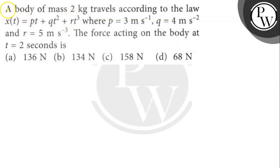Hello bachos, let's read the question. A body of mass 2 kg travels according to the law X(t) = pt + qt² + rt³, where p = 3 m/s, q = 4 m/s², and r = 5 m/s³. The force acting on the body at t = 2 seconds is how much Newton?